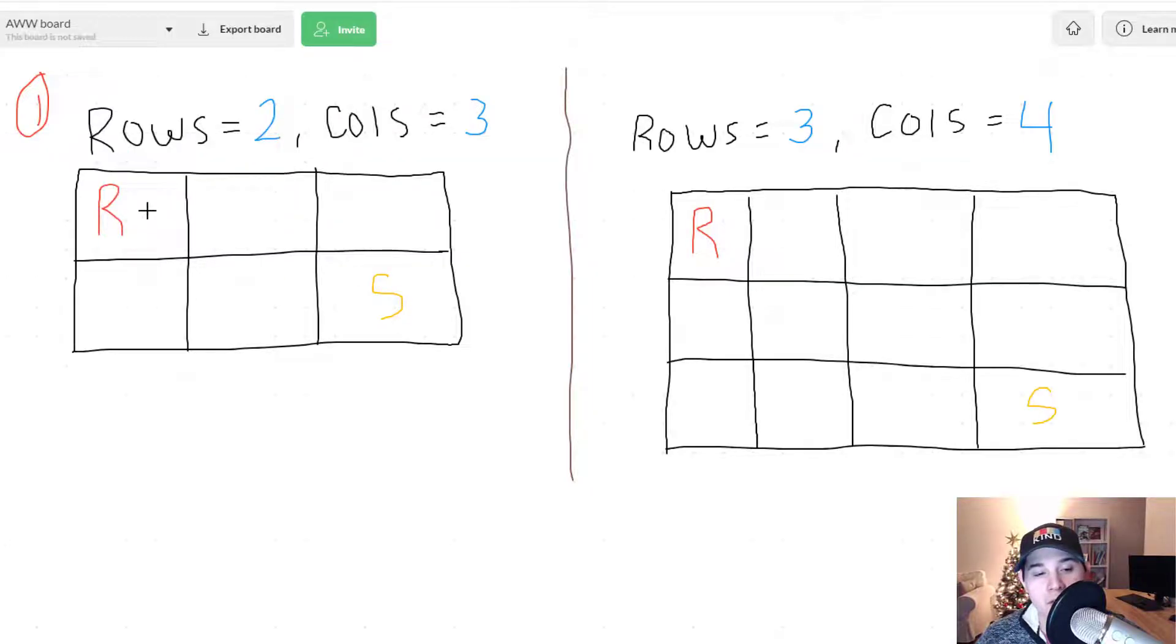So one path is we could go right right and then down or we could go right down right or we could go down right right again. And so that would give us a total of three unique paths.